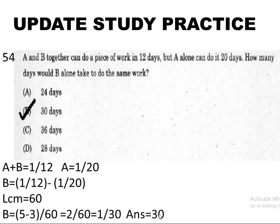So the answer is 1 by 30, which means 30 days. B alone equals 30 days, A alone equals 20 days, and A and B together equals 12 days. Now we can see B is equal to 30, so A plus B equals 12.